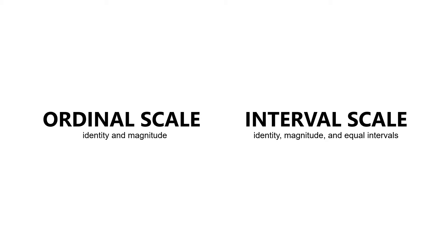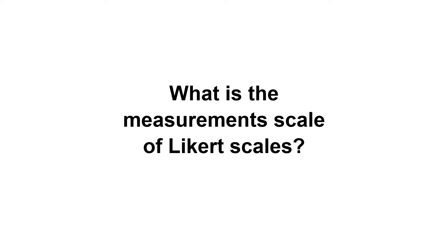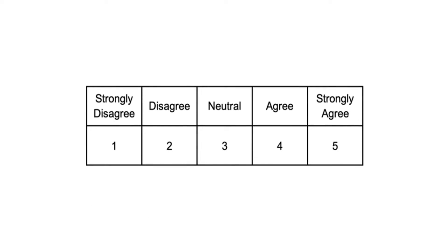By using the interval scale, one can know which of the two values is greater or smaller. It also enables us to know by how much the values are greater or smaller. Furthermore, the equal distances between attributes on an interval scale differ from an ordinal scale. Now, what is the measurement scale of Likert scales? To answer that, suppose we have a 5-point Likert scale. For the sake of argument, suppose that Likert items are interval. It is easy to check that these items have both identity and magnitude, because we can differentiate 'strongly disagree' from 'disagree,' and we are also certain that 'strongly disagree' is lower compared to 'disagree.'